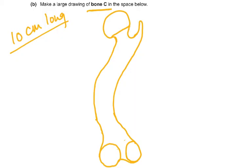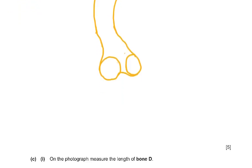This drawing was worth five marks. The five marks cover: drawing at least 10 centimeters long, a clean outer line drawn with a sharp pencil and continuous line, no shading, a rounded shape of the head, a groove at the base, a curved shaft, and the circular structure beneath the neck of the head.